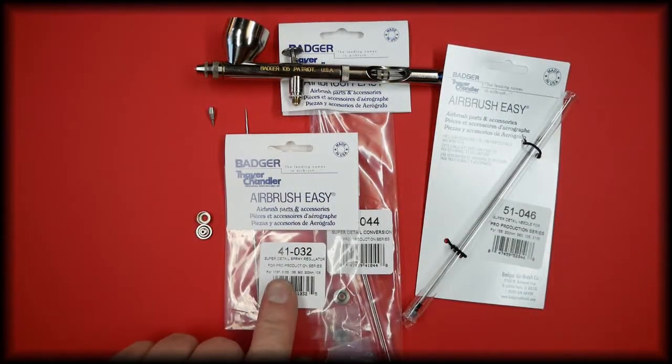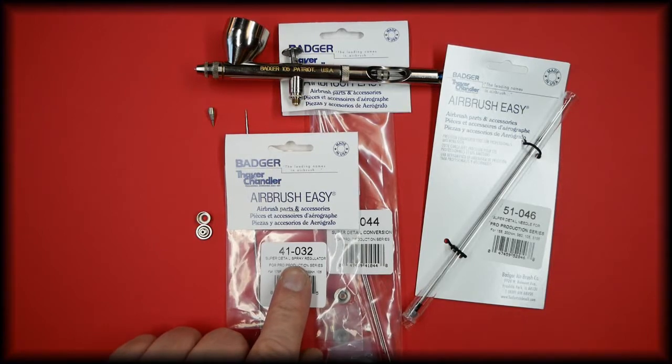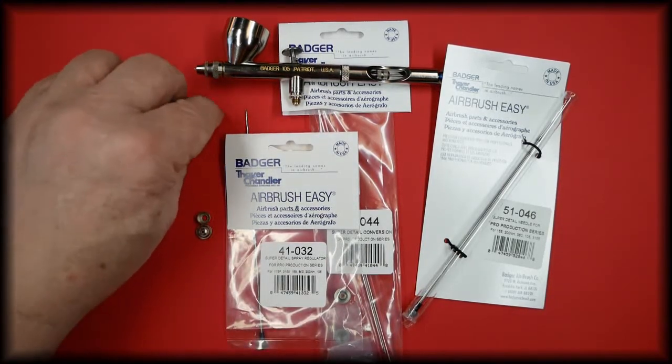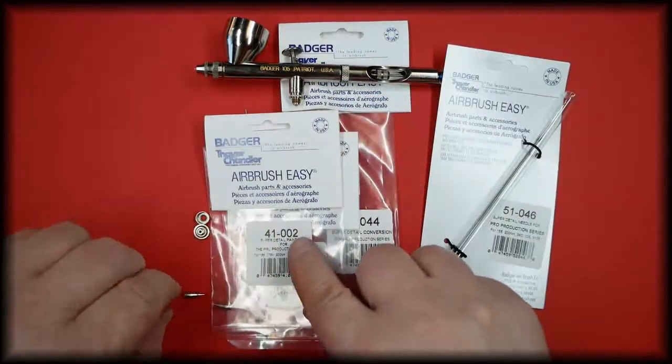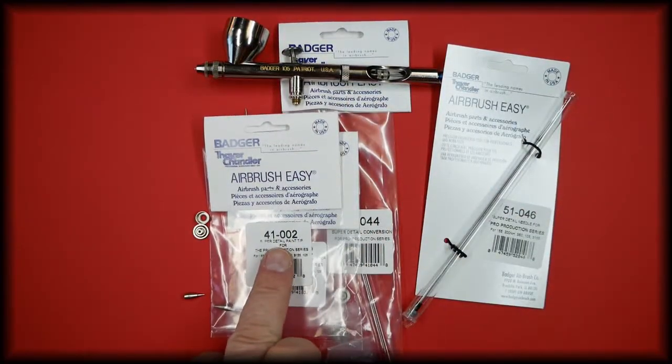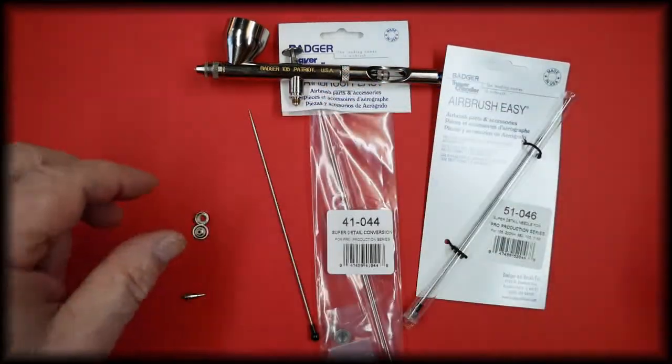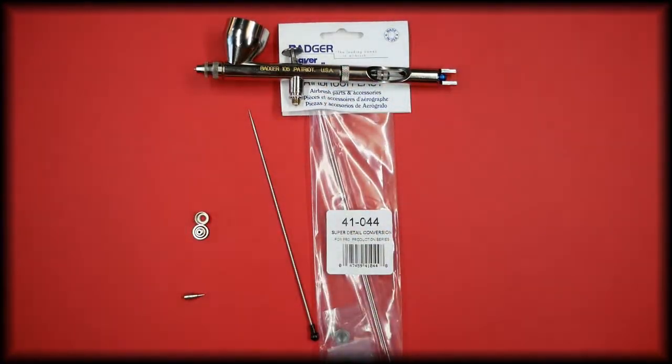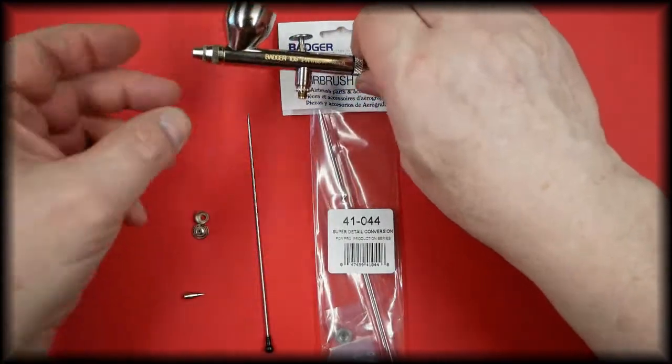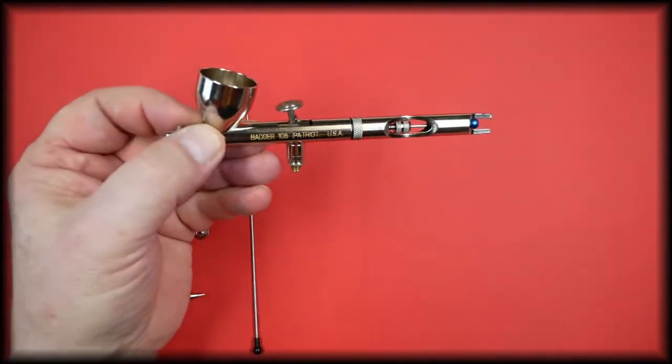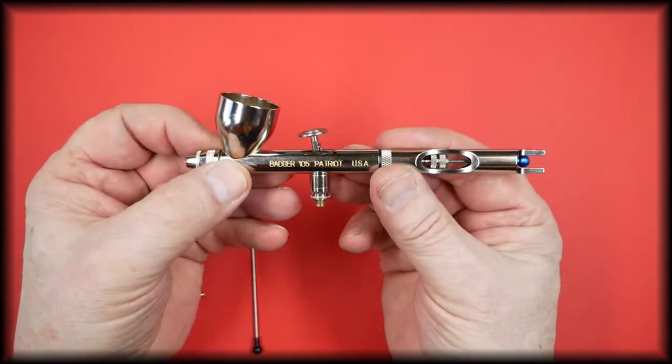The two-part spray regulator is part number 41-032 and the tip is part number 41-002. To fit this kit into the airbrush, this airbrush has the point five kit already installed.